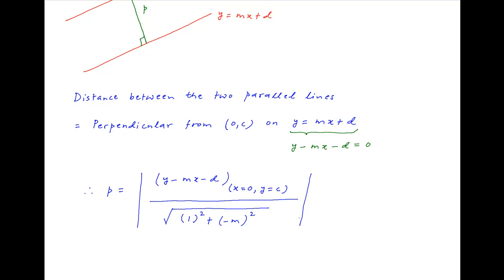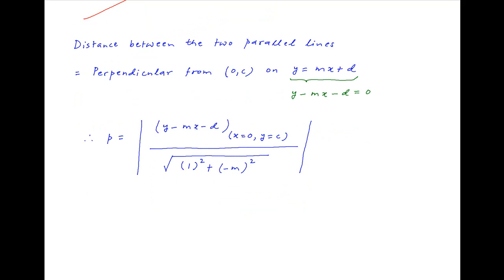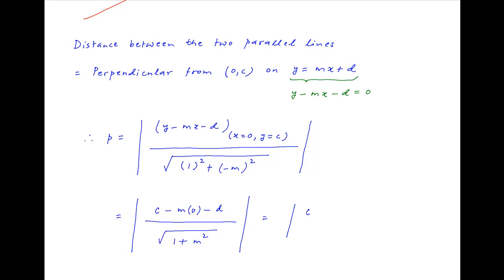Therefore, the distance p is equal to the absolute value of c minus m times 0 minus d, divided by the square root of 1 plus m squared. This simplifies to the absolute value of c minus d, divided by the square root of 1 plus m squared. This is the required final answer.